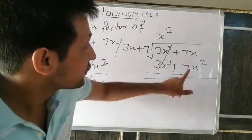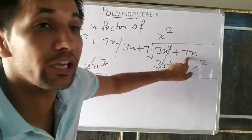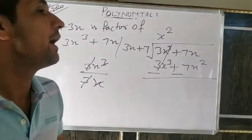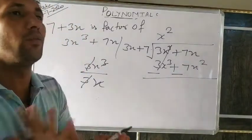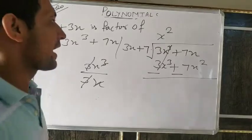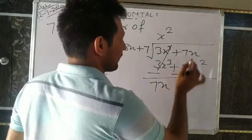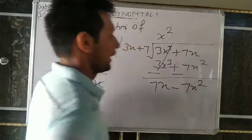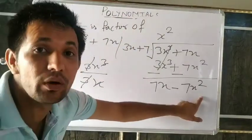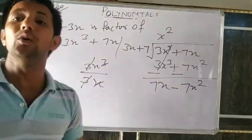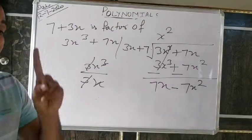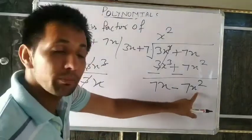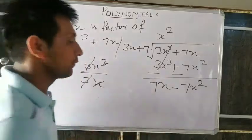3x³ minus 3x³ equals zero. Now 7x — is 7x² and 7x like or unlike terms? They are unlike terms (different powers). Unlike terms we cannot subtract. So we write −7x² separately, then bring down +7x. So we have −7x²+7x remaining.